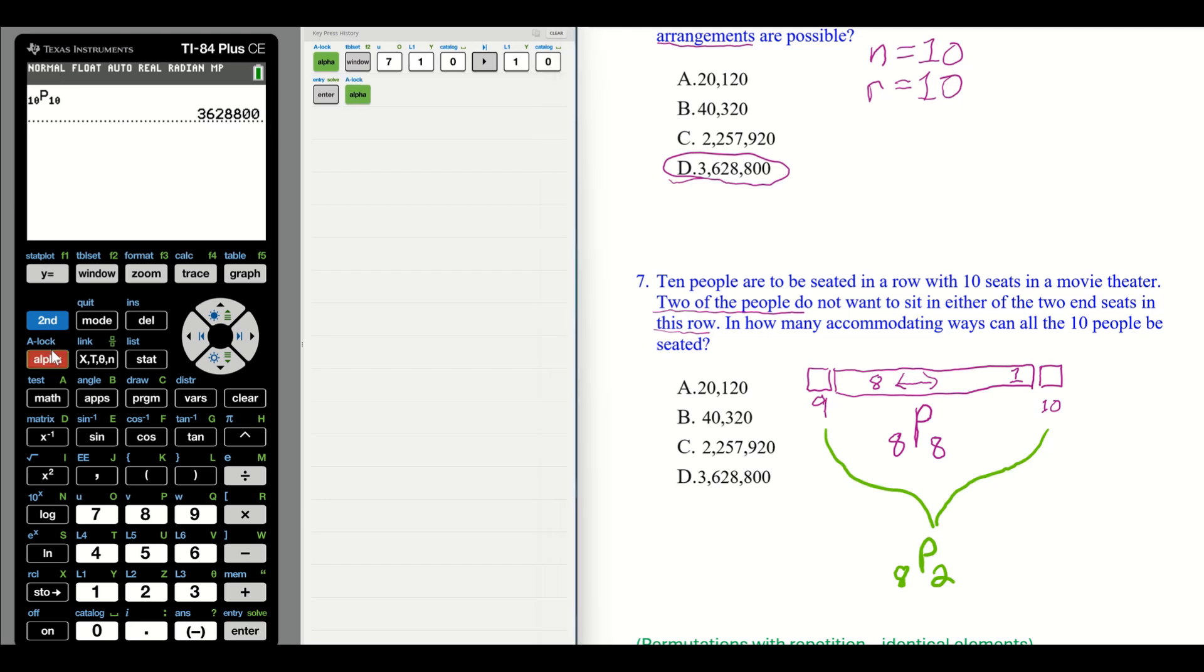Let's put this in the calculator. Alpha window, 7. 8 out of 8. Now, we are multiplying these together. You must multiply the two parts of your situation. So times, alpha, window, 7. And that will be 2 out of the 8 is what we're concerned with. And this is correct, C.